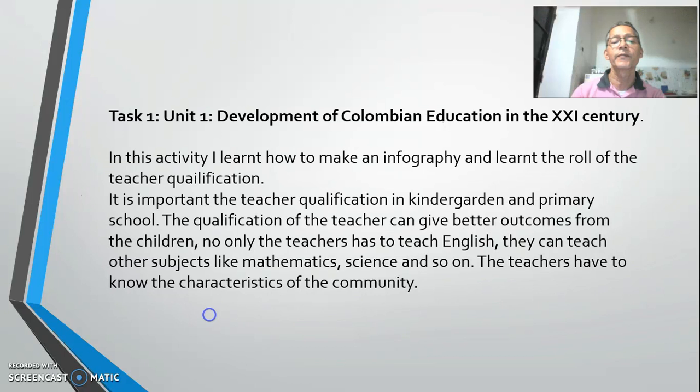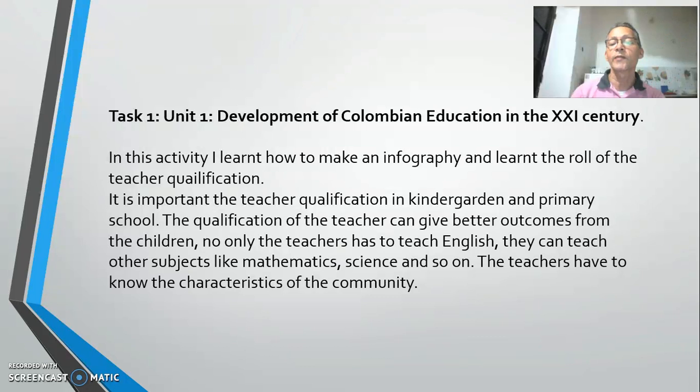Task 1, Unit 1: Development of Colombian education in the 21st century. In this activity, I learned how to make an infographic and learned the role of teacher qualification. Teacher qualification in kindergarten and primary school is important. The qualification of the teacher can give better outcomes for children. Not only does the teacher teach English — they can teach other subjects like mathematics, science, and so on. The teacher also has to know the characteristics of the community.